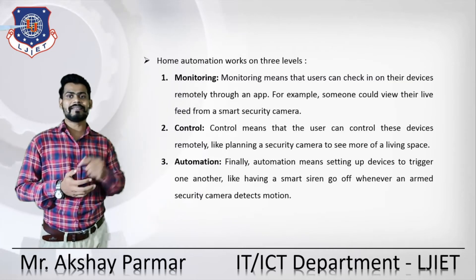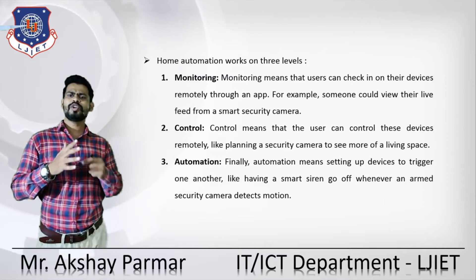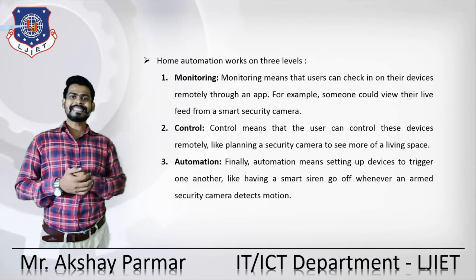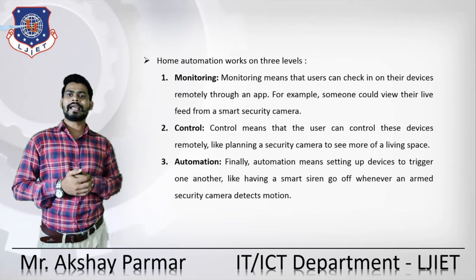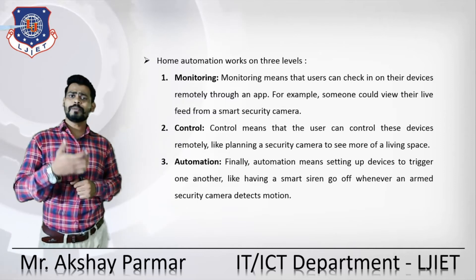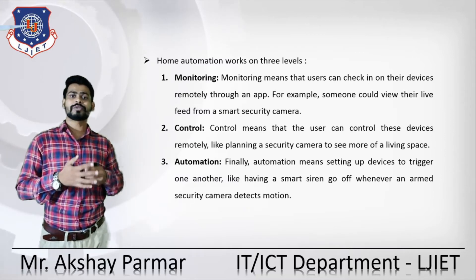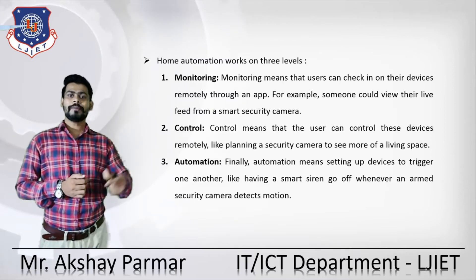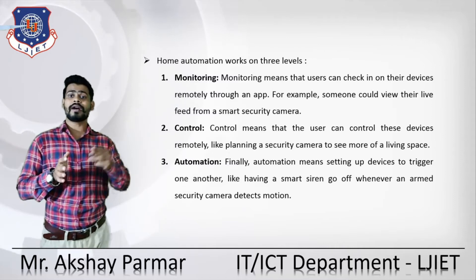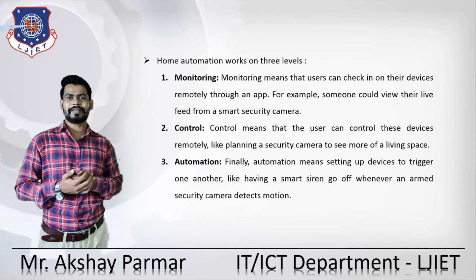Home automation works on three levels: monitoring, control, and automation. Monitoring means the user can check on a device remotely through an app — for example, someone can view their live feed from a smart security camera. Control means the user can control a device remotely, like panning a security camera to see more of the living space. Finally, automation means setting devices to trigger one another — like having a smart siren go off whenever an armed security camera detects motion.